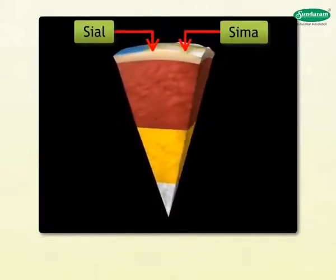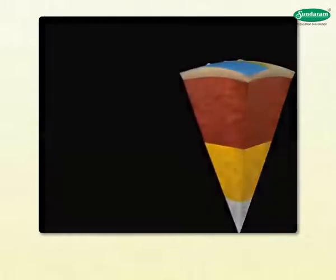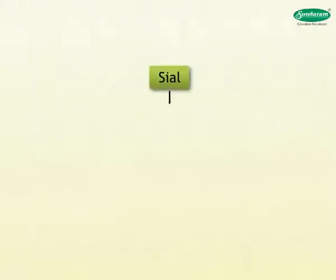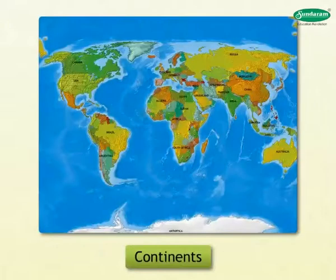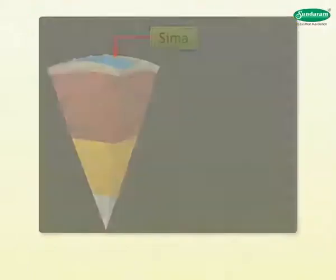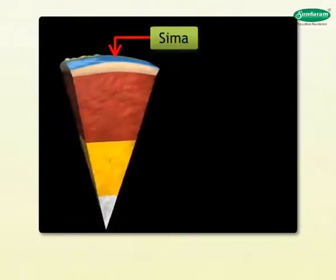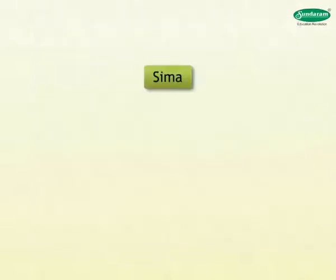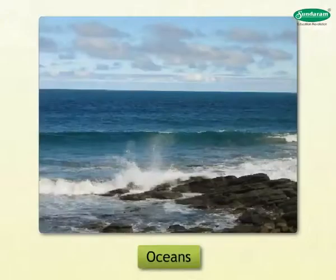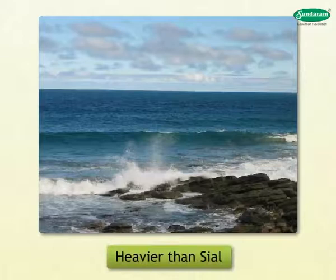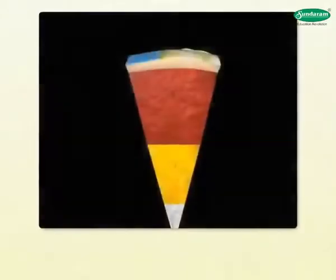The crust is made up of two parts: SIAL and SIMA. SIAL is the upper portion of the crust; the rocks in this layer consist of silica and aluminium. These elements are light in weight, so they are found in the upper layers, and continents are mainly made up of SIAL. SIMA is the layer below the SIAL; the rocks in this layer consist of compounds of silica and magnesium. Most of the oceans are formed out of this layer, and it is heavier than SIAL.